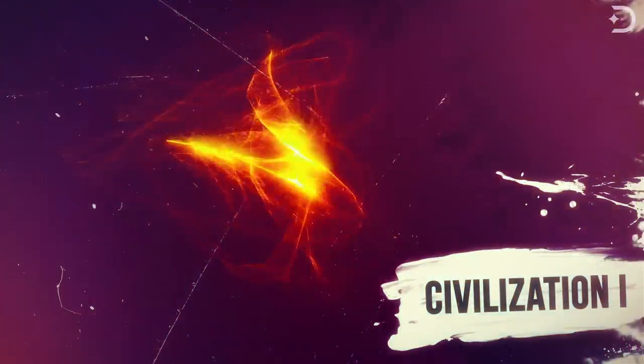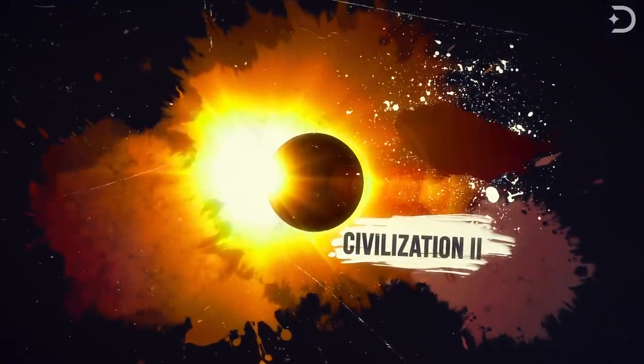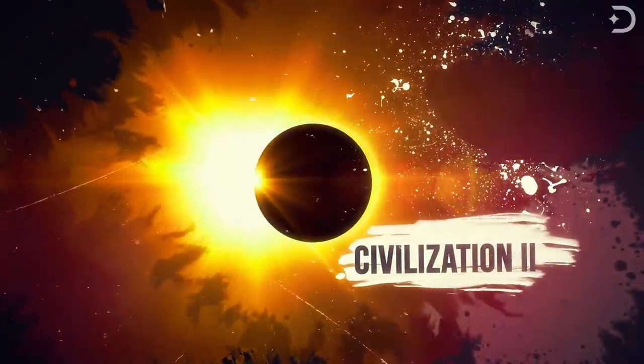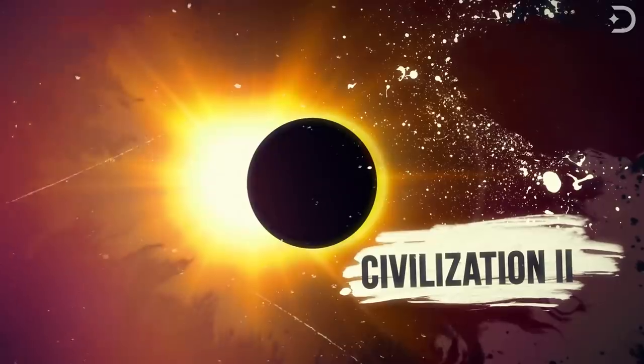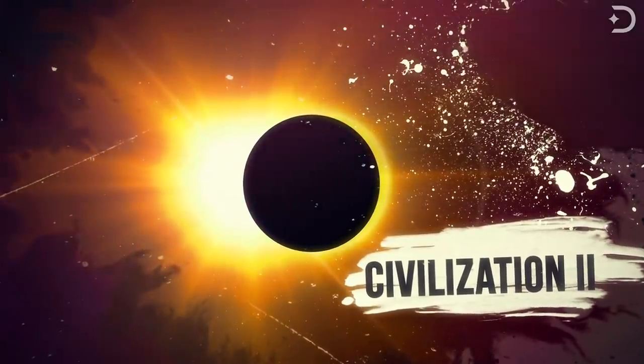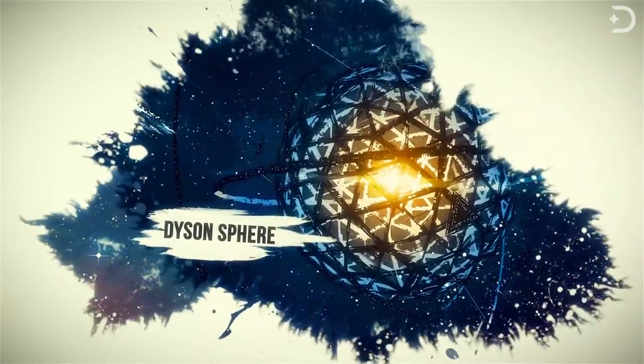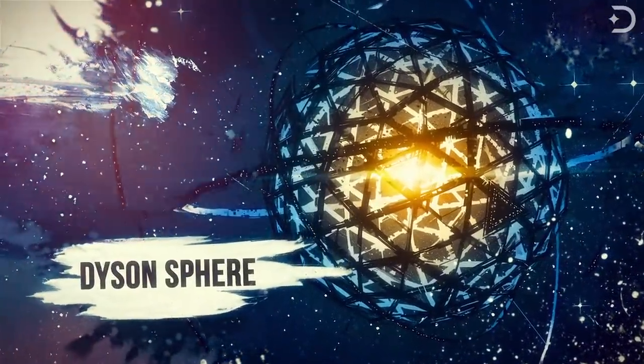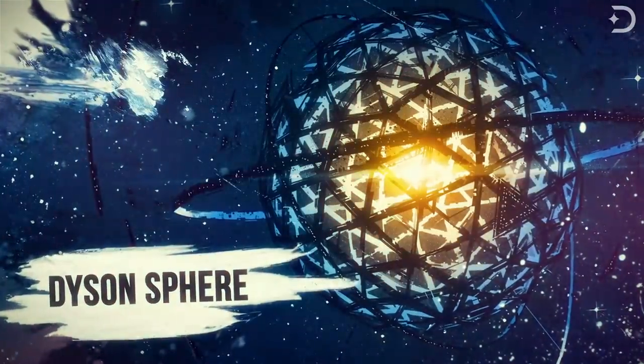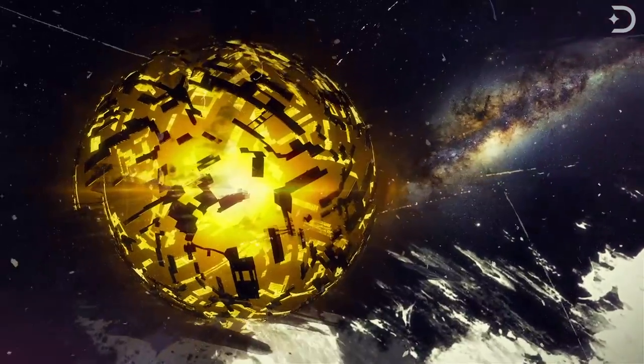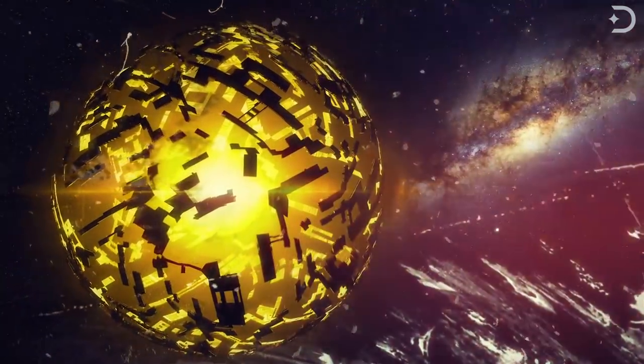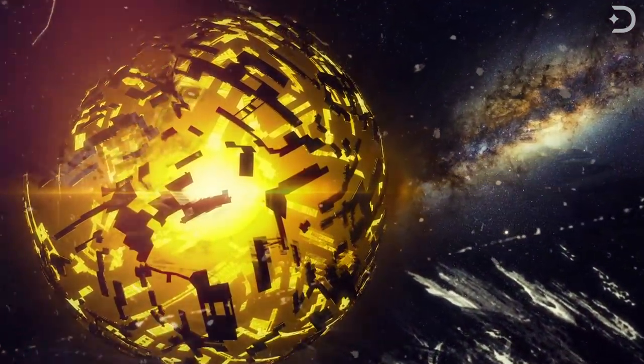A Type 2 civilization is called a stellar civilization. It can harness the total energy of its planet's parent star with the popular hypothetical concept of the Dyson Sphere, which is a device that is built around the entire star to transfer its energy to the planet, such as a network of solar power satellites that would enclose a star completely and capture most or all of its energy output.